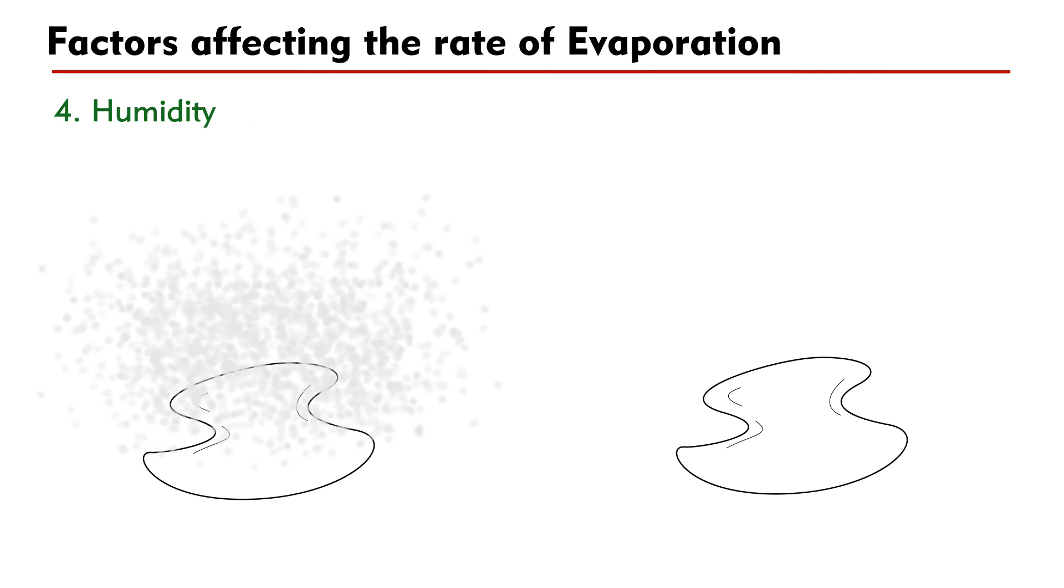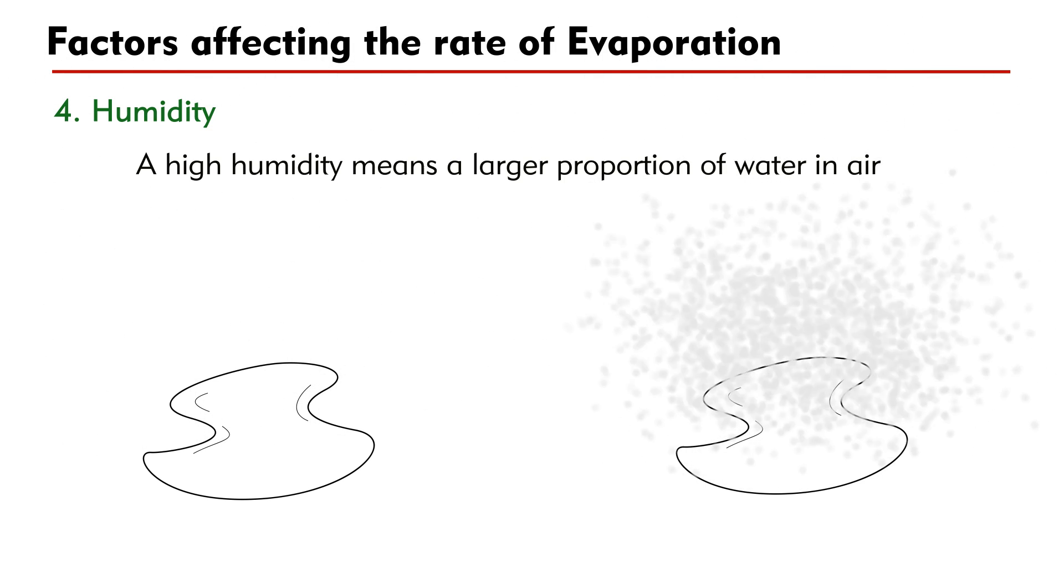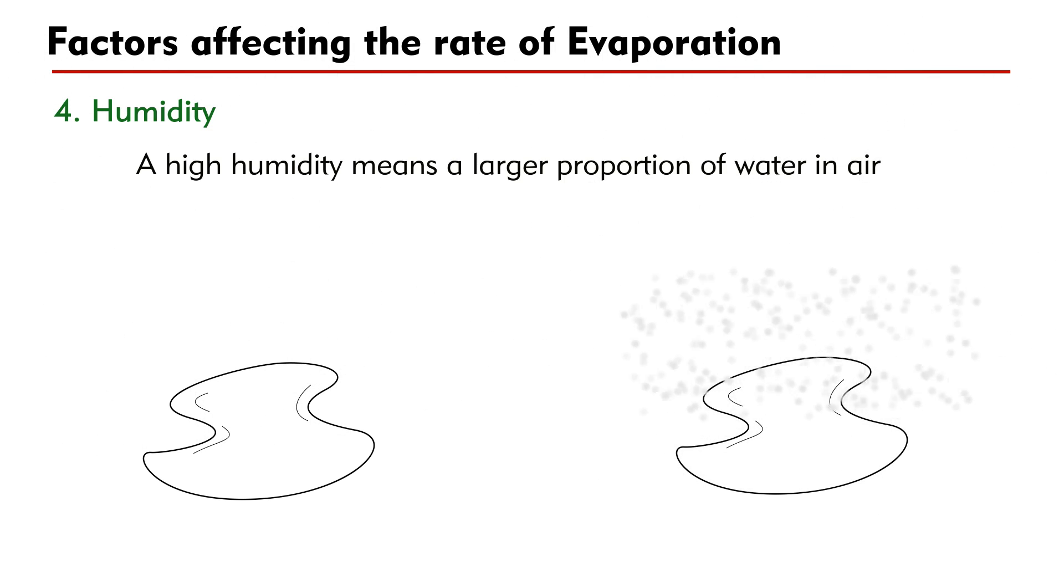Fourthly, evaporation of water is affected by humidity. The conversion from liquid to gas is a two-way process. While liquid can vaporize to form a gas, it is equally likely for a gas to condense into a liquid. A high humidity means a larger proportion of water in air, and it is more likely for the water vapor to condense back to liquid water.